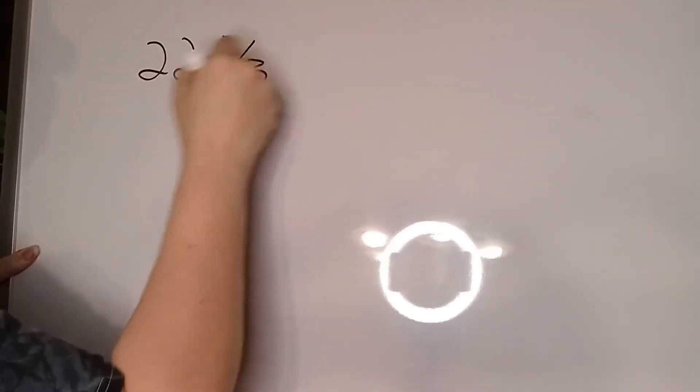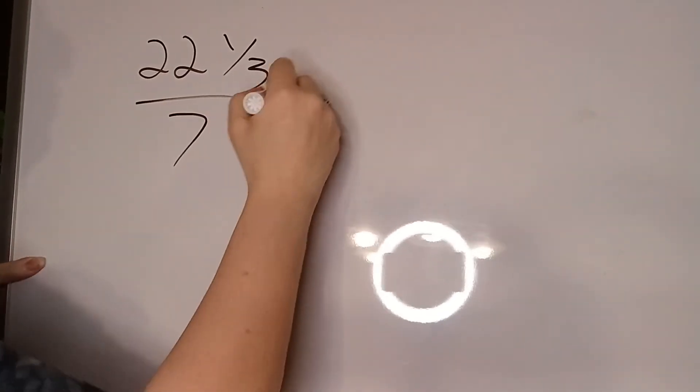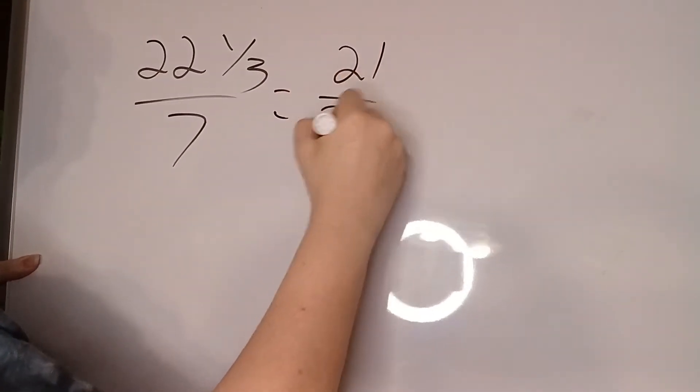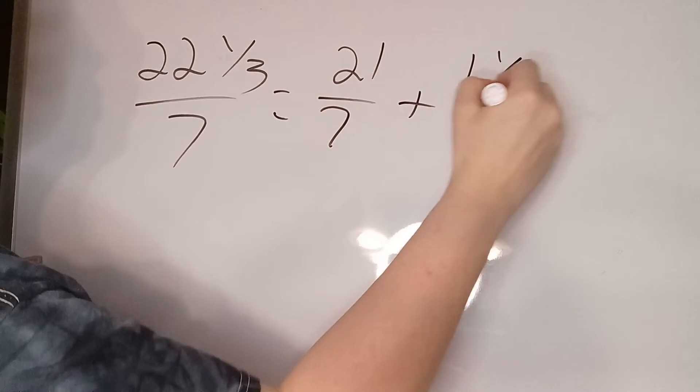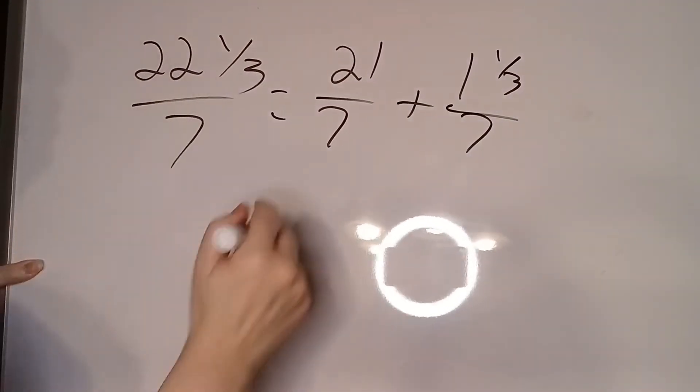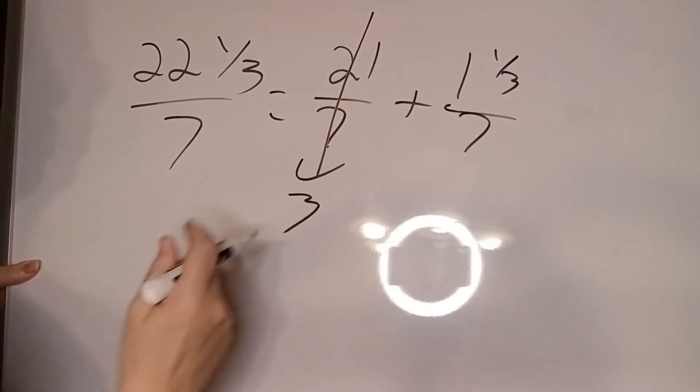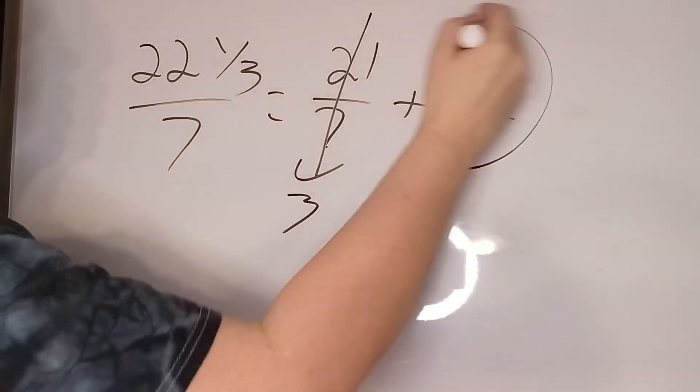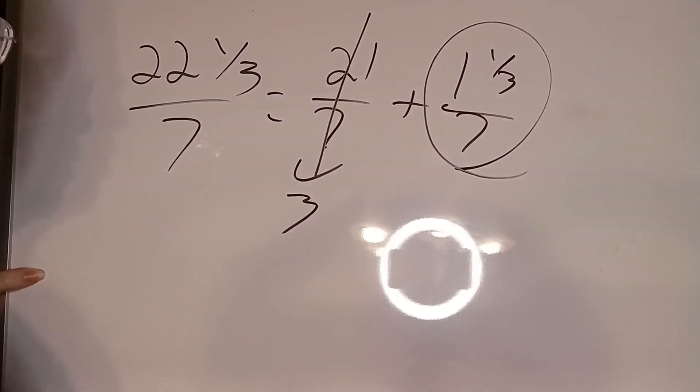It was 22 and a third divided by 7. I'm going to split this into 21 over 7 plus 1 and a third over 7. All right, this will give us the whole number, 3. And now we're just looking at the fractional part.